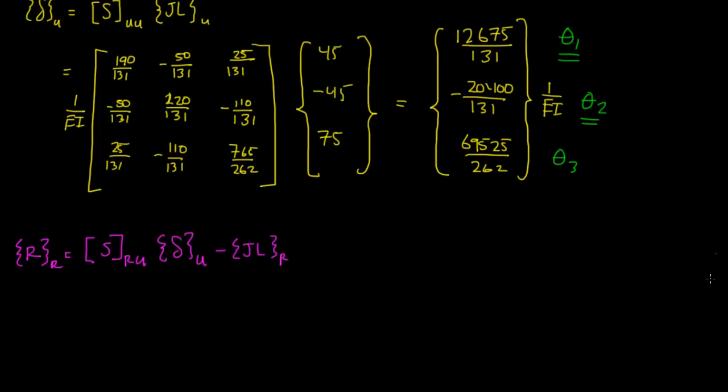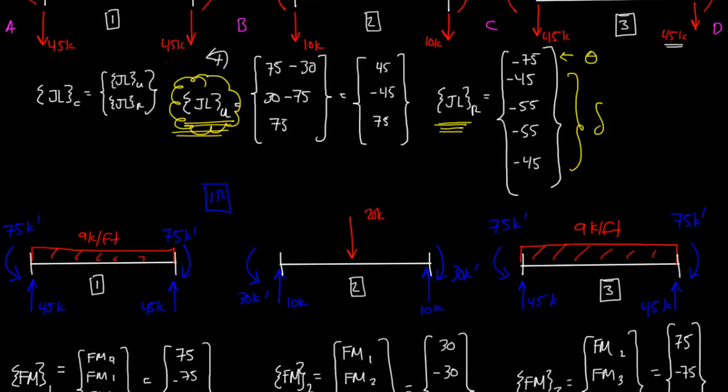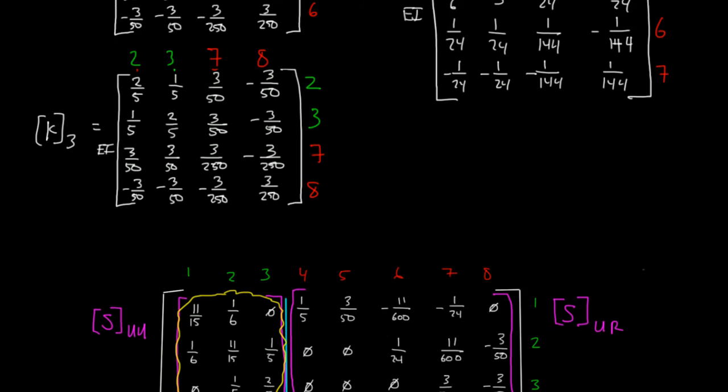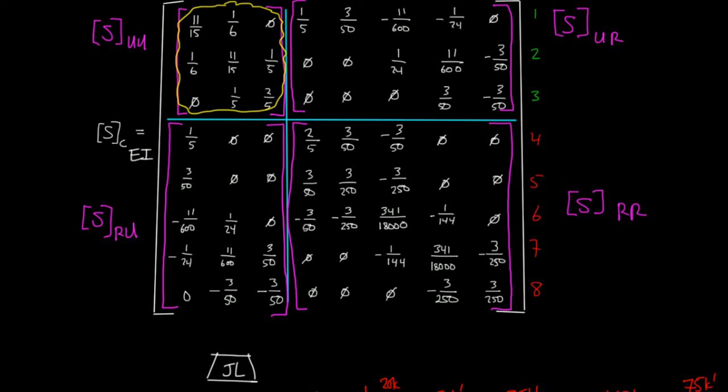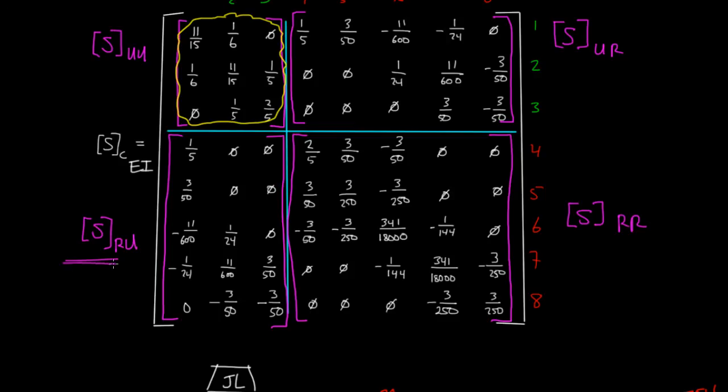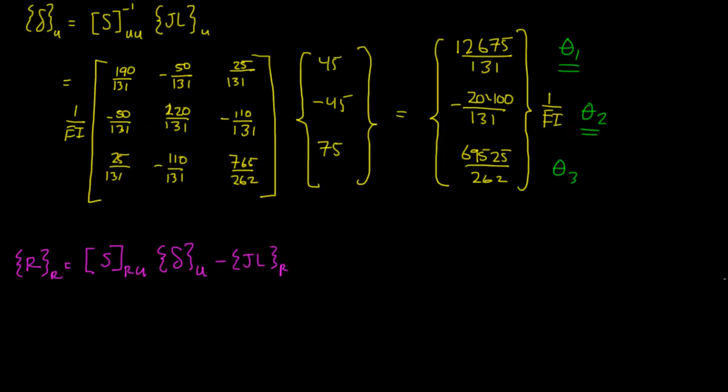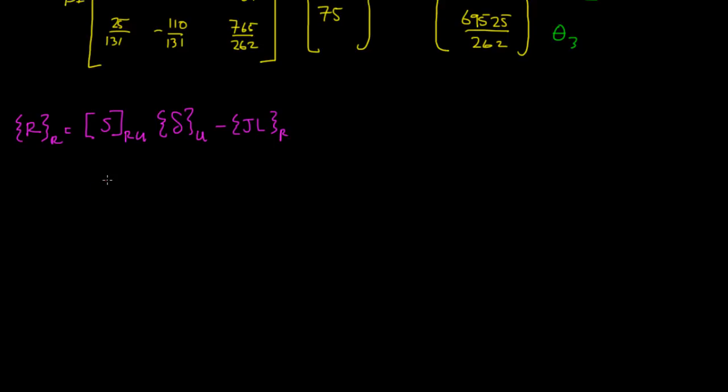And our S sub RU matrix, right here, right there, S sub RU is this matrix right here, this 5 by 3 matrix, so I'm going to bring that down here. And those values were 1/5, 0, 0, 3 over 50, 0, 0, negative 11 over 600, 1 over 24, 0, negative 1 over 24, 11 over 600.